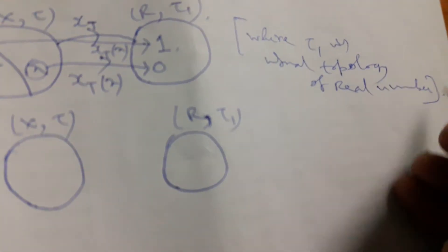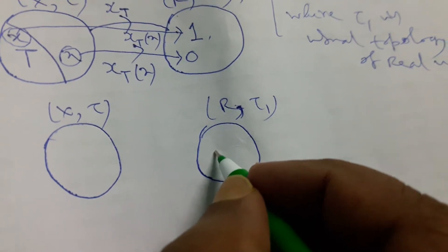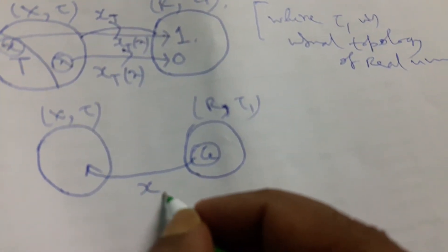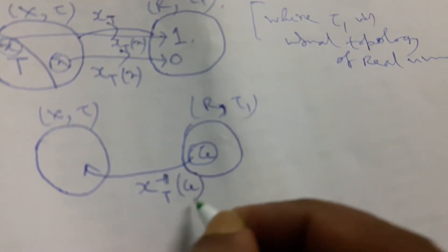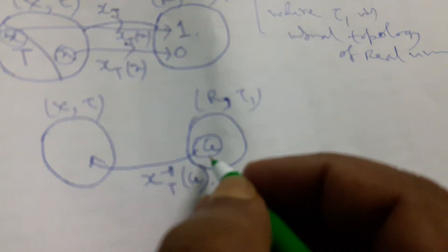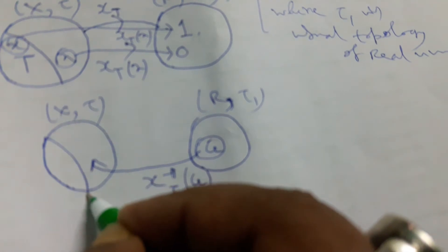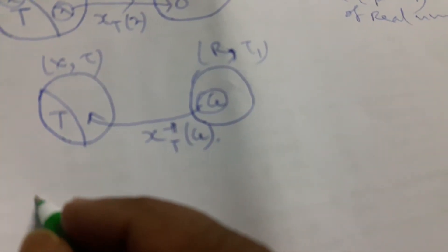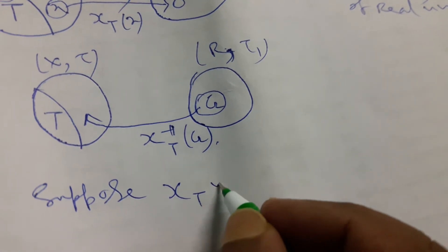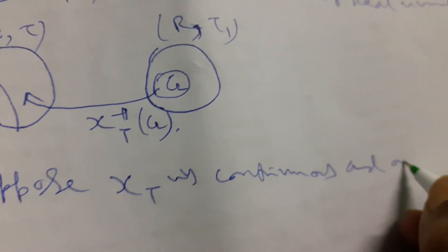Now if we find it here, another function, say G that is open, and here we find χ_T^(-1)(G). And if it is continuous, taking χ_T^(-1)(G), here is the entire space T. And suppose χ_T is continuous and an open set,